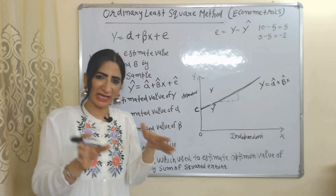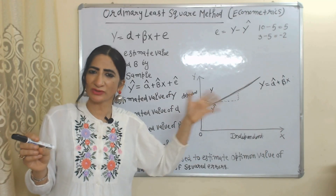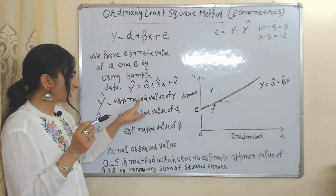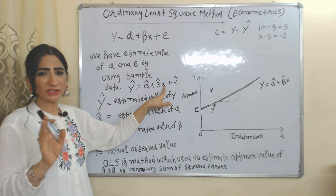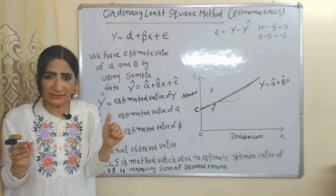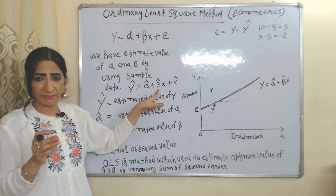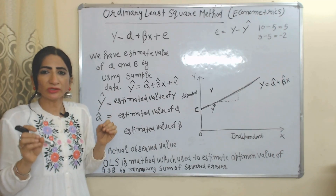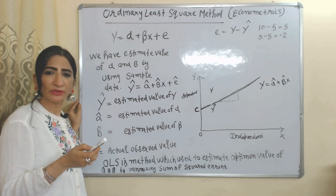We estimate the values of alpha and beta using sample data. After estimation, we get a new equation: Y-hat is the estimated value of Y, alpha-hat is the estimated value of alpha, and beta-hat is the estimated value of beta. X is the independent variable, which we assume to be constant. Ordinary Least Squares method is used in order to find the optimum values of alpha-hat and beta-hat by minimizing overall error.